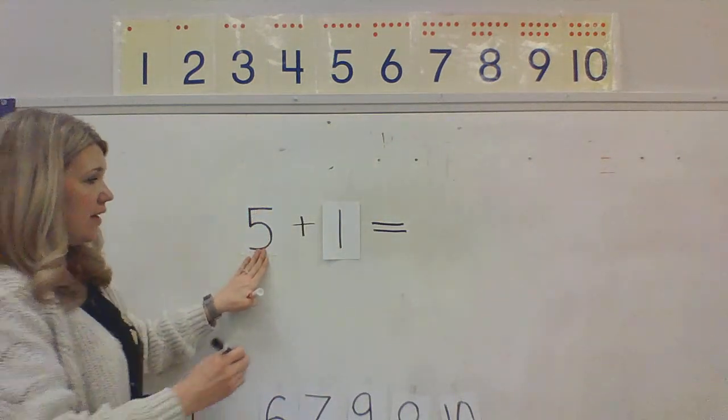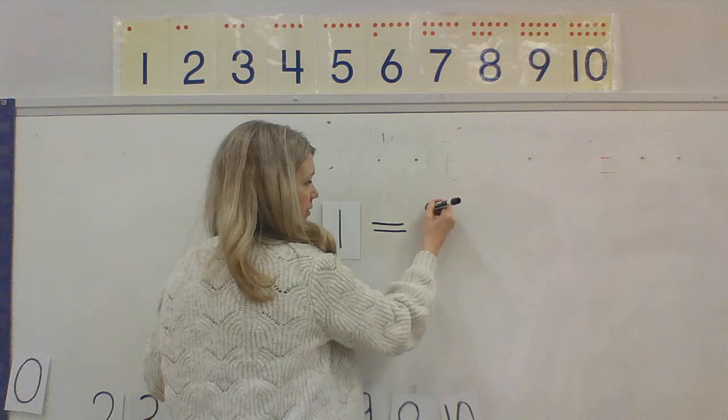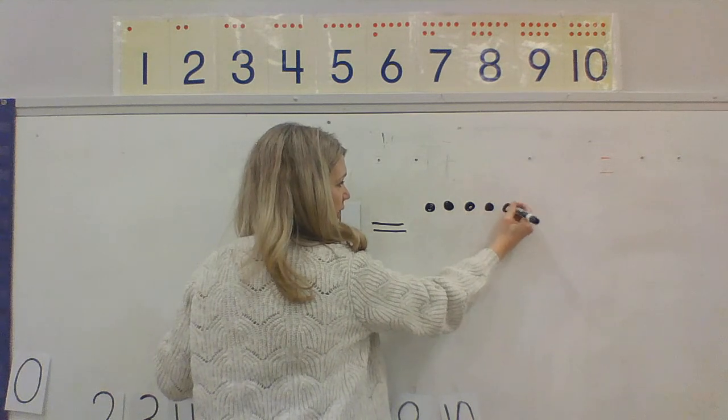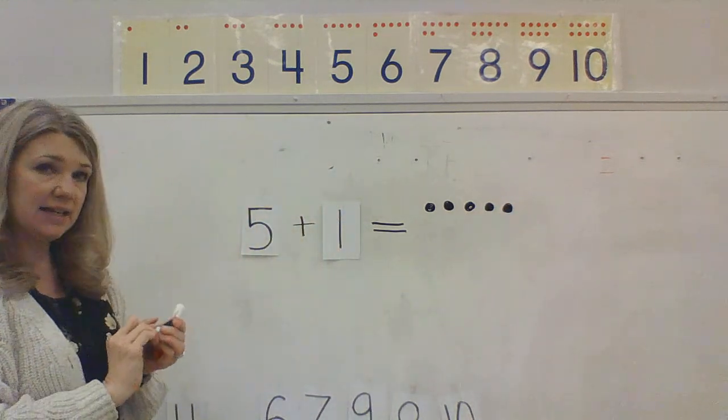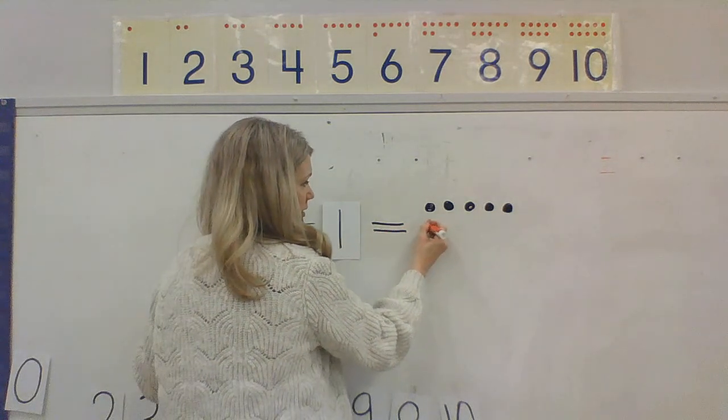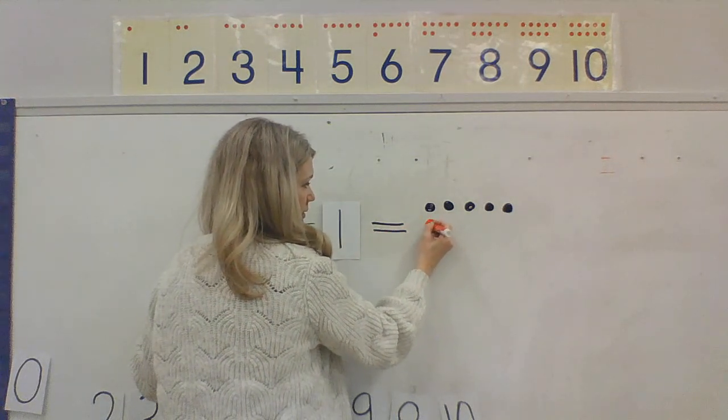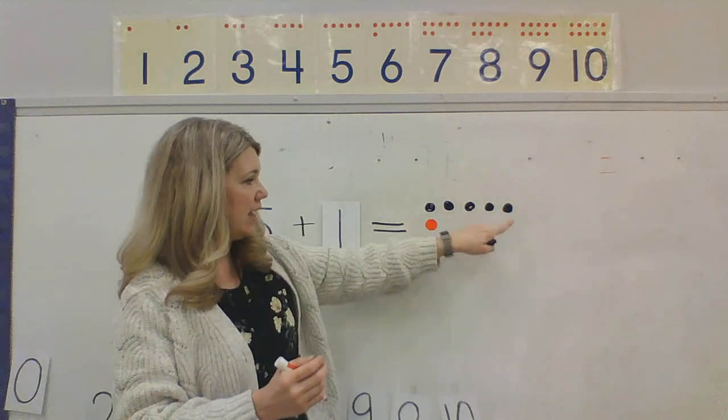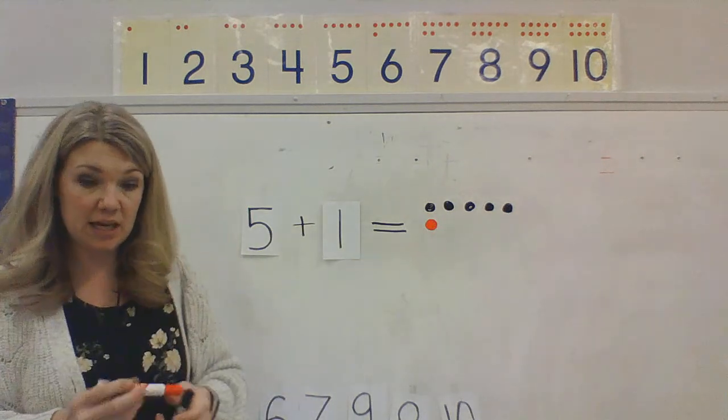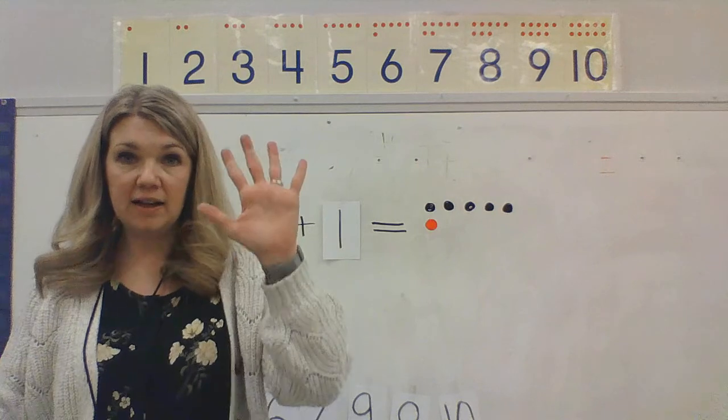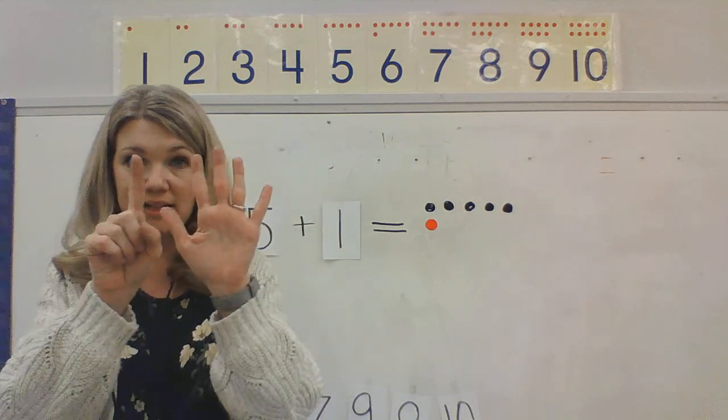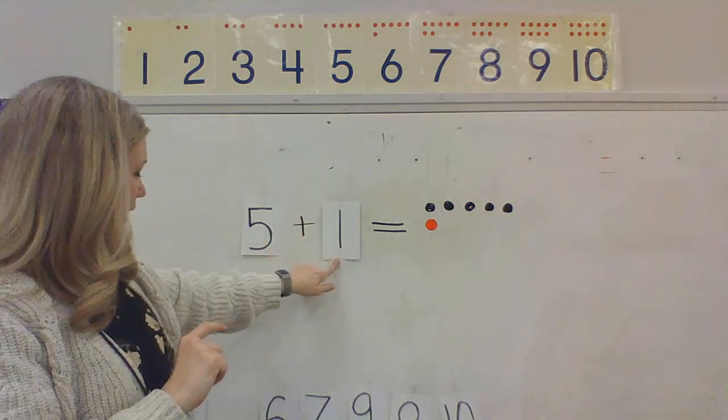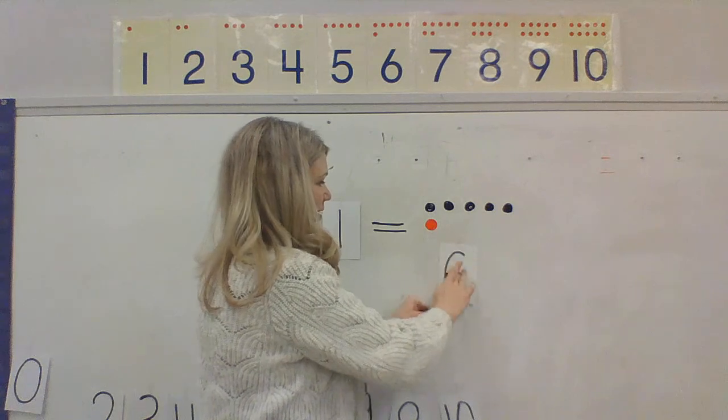I'm going to use a different marker to show you. So, I have the number 5. I have 1, 2, 3, 4, 5. And I need to add 1 more. I have 5 plus 1. 1, 2, 3, 4, 5 plus 1. That gives me the number. Let's check it with our fingers. 5 plus 1 is the number 5, 6. The number 6. 5 plus 1 is the number 6.